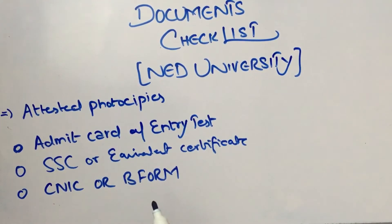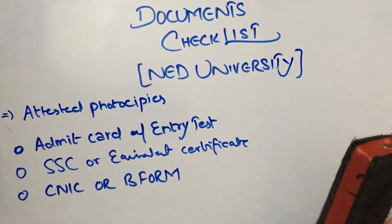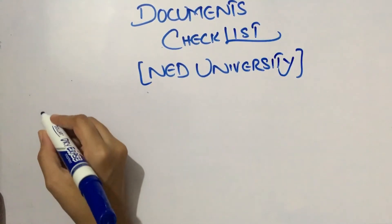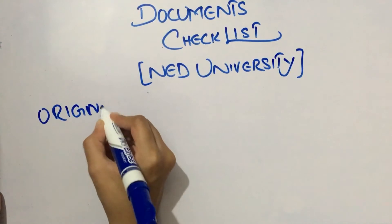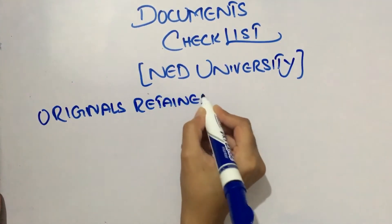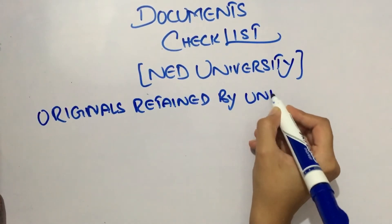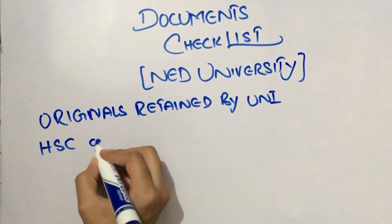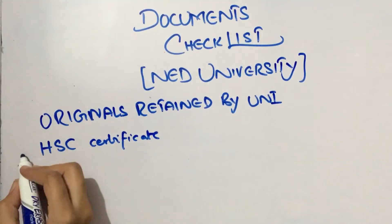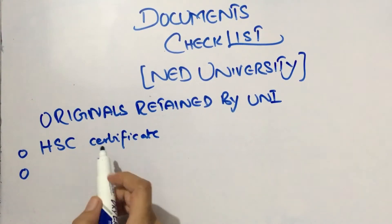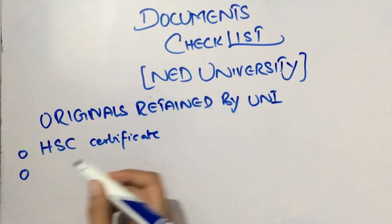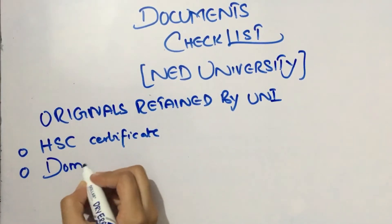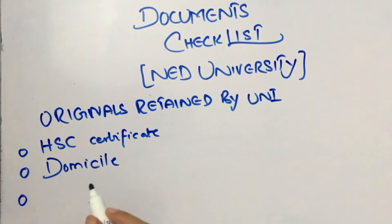Now let's discuss the original documents that the university will keep from you. The originals are retained by the university. The first one is the HSC Certificate, which includes the result of the second year.